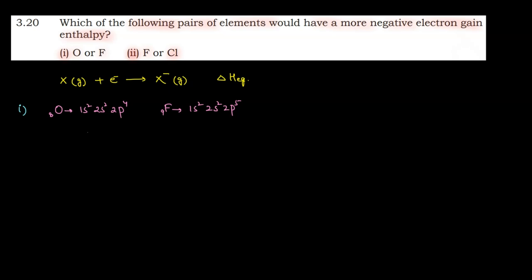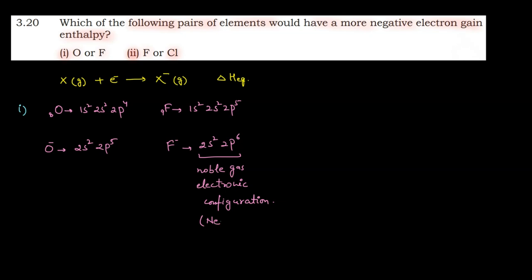If we consider the electron gain process for both: when oxygen accepts one electron, it becomes O⁻ with outermost configuration 2s², 2p⁵. When fluorine accepts one electron, it becomes F⁻ with outermost configuration 2s², 2p⁶. We know that 2s², 2p⁶ is the noble gas electronic configuration — specifically, the configuration of neon.